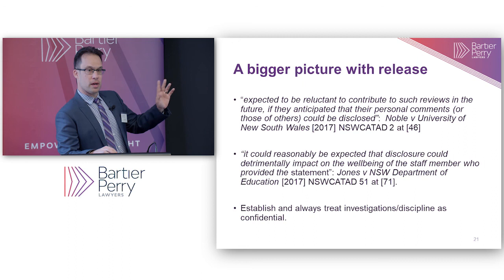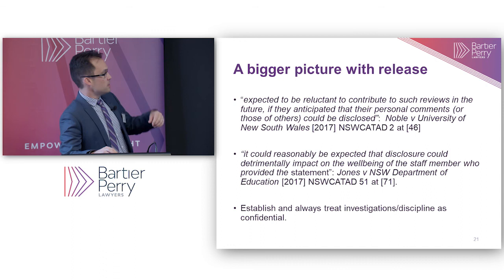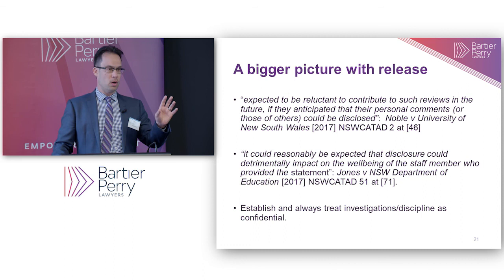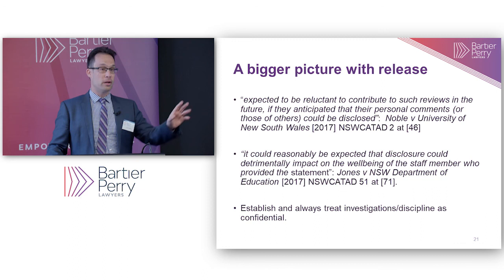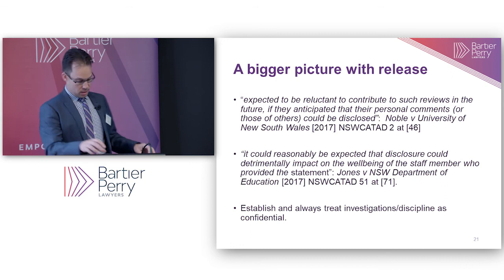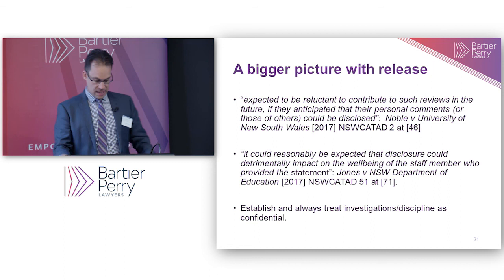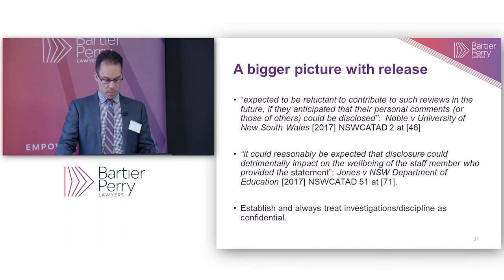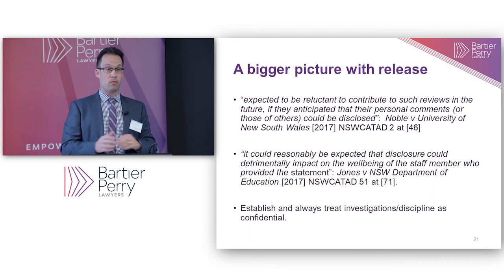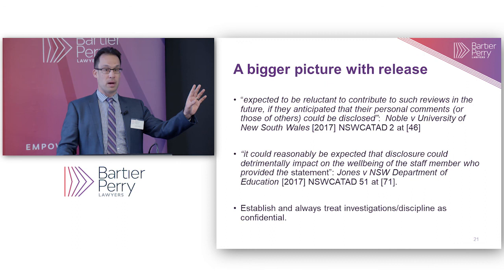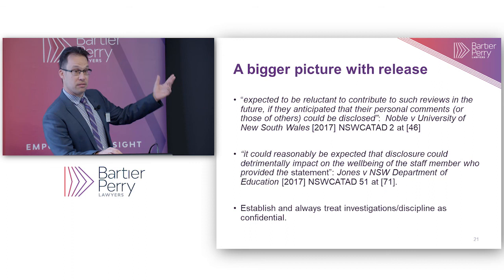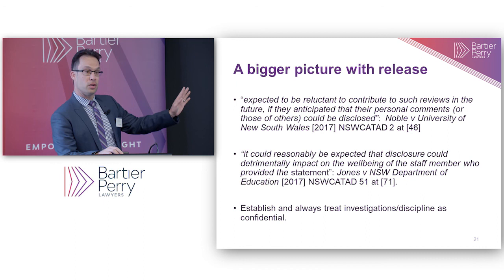The Noble case involved a culture survey at the University of NSW where within a particular faculty everyone was asked to give their frank views about management and colleagues. As a result, the university learned a lot about where things weren't going well. Those who were the subject of the survey wanted to see the report — who said what about them. Evidence was given by the person who created the survey saying the only reason we get frank feedback is because we promise confidentiality. If you release this, it sends a message: don't talk up because it's only going to come back and bite you. The tribunal said no — you're not getting it.